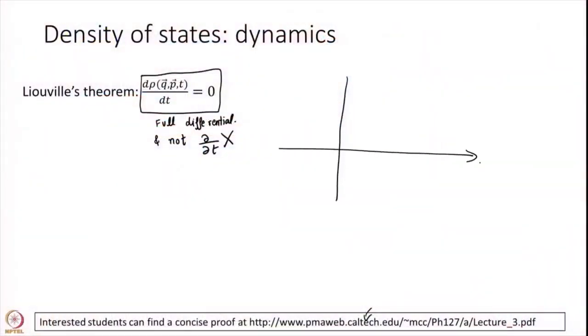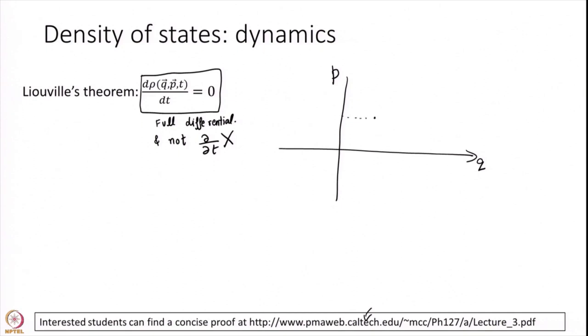Let me tell you what Liouville's theorem means and its implication. Let me draw a one-dimensional phase space — well, it is always 2D: Q and P. So I have a one-dimensional system with coordinate Q and the corresponding momentum P. What this is saying is, let us look at some point in this phase space and a little box of length delta Q and length delta P.